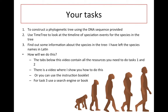So your tasks, if you choose to accept: you're going to construct a phylogenetic tree using the DNA sequence provided. We're going to have a look at a website called TimeTree and look at the timeline of speciation events for the species in the tree. We're going to find out some information about the species in the tree — I've left the species names in Latin. This is something I want you to do on your own or in groups, with a little bit of independent learning.